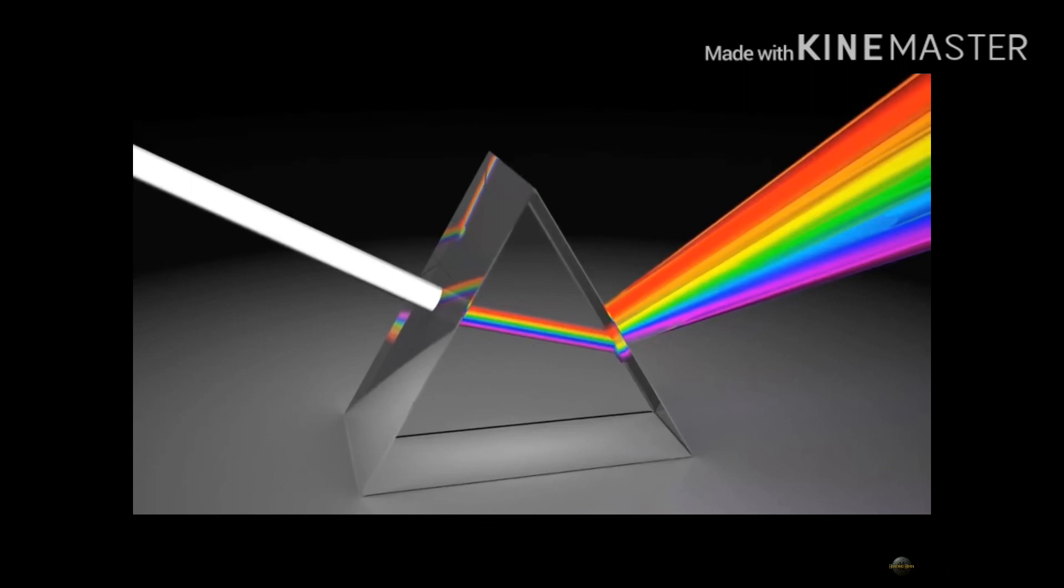White light is a combination of seven colors. If this white light is passed through a prism, then this white light gets dispersed into seven individual colors.